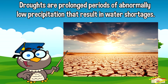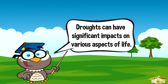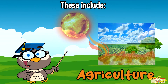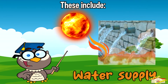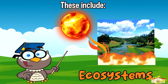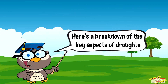Droughts are prolonged periods of abnormally low precipitation that result in water shortages. Droughts can have significant impacts on various aspects of life, including agriculture, water supply, and ecosystems. Here's a breakdown of the key aspects of droughts.